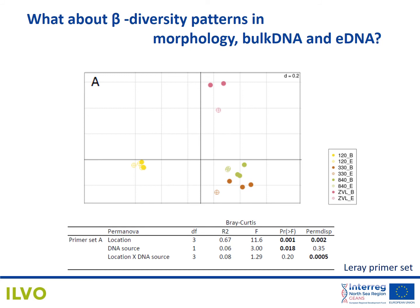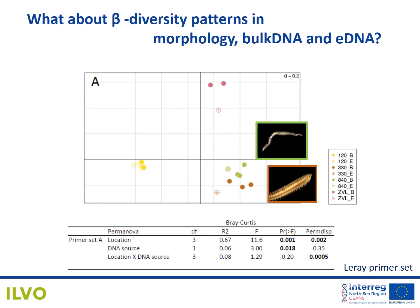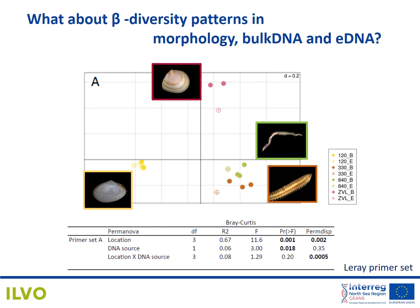What about beta diversity patterns? Are the four communities that are clearly distinct based on morphological taxonomy also differentiated when we look at the bulk or eDNA? Here you can see the NMDS plot using the Bray-Curtis dissimilarity index with both the bulk DNA and the eDNA samples represented. The bulk DNA samples are indicated by full circles; the eDNA samples are indicated by crosses. We can clearly see that the two offshore sandy locations with intermediate diversity are more similar to each other than to the fine sandy and the fine muddy coastal location. Both bulk DNA and eDNA from the preservative recovered all four communities and revealed similar beta diversity patterns. However, our PERMANOVA shows a significant difference between the community structure in the bulk DNA and the eDNA samples.